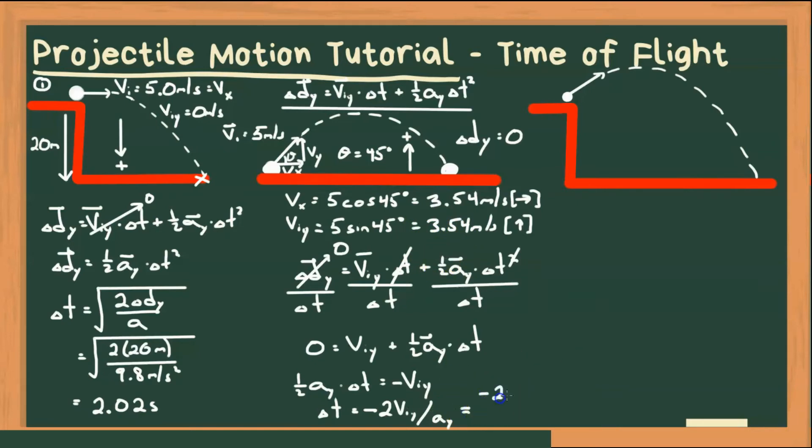So if we plug in numbers, we'll get minus 2 times Vy, which is 3.54 meters per second, divided by the acceleration of the gravity, which is now going to be negative 9.8 meters per second squared. So that negative is going to cancel with this negative. And in this example, we will get a time of 0.72 seconds.